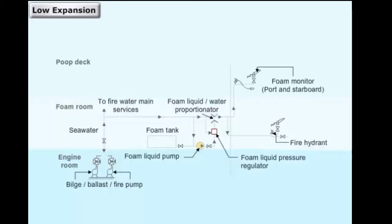The figure shows a low expansion foam system. The foam tank is inside the foam room, which is located below the poop deck and away from cargo and machinery spaces. The tank stores the foam compound. Bilge, ballast, or fire pumps located in the engine room deliver seawater to the foam water main system.